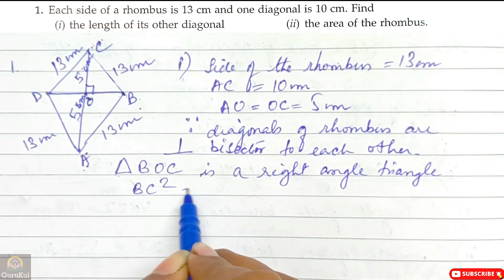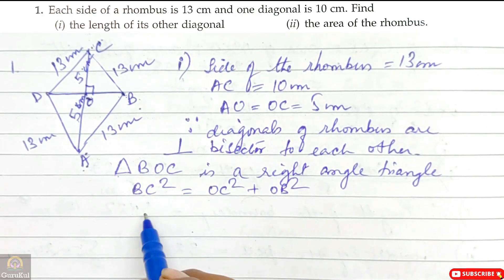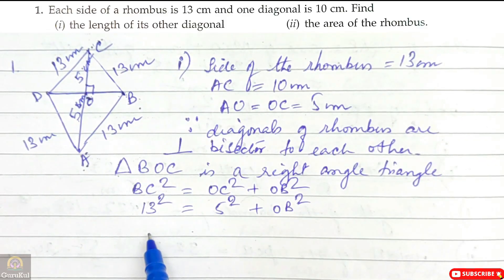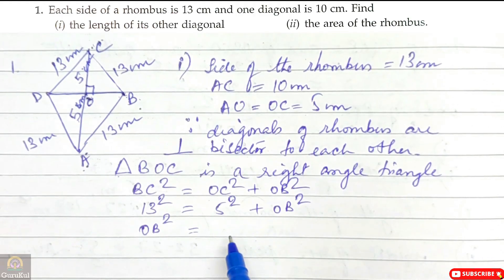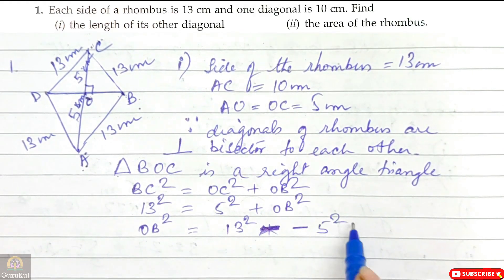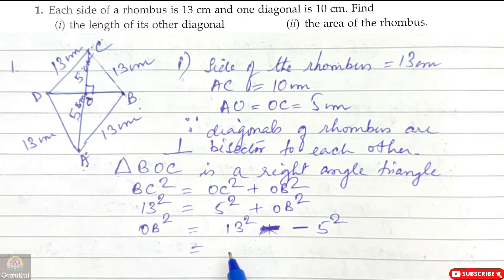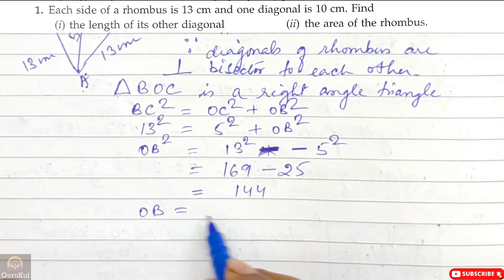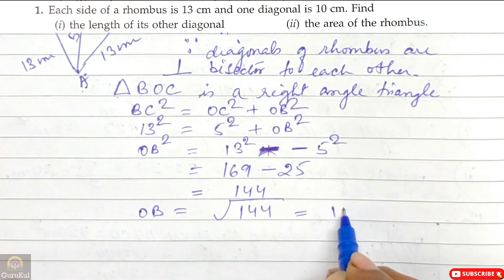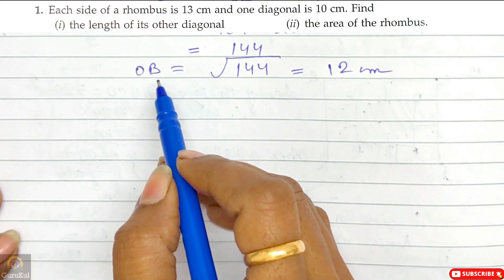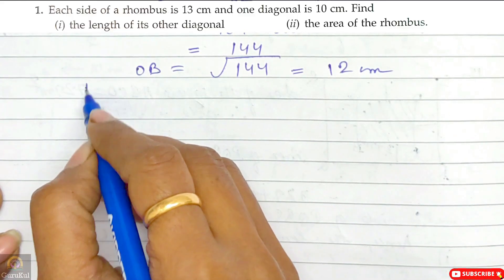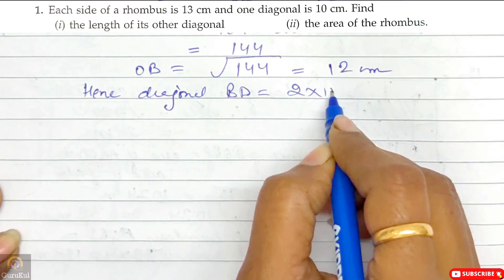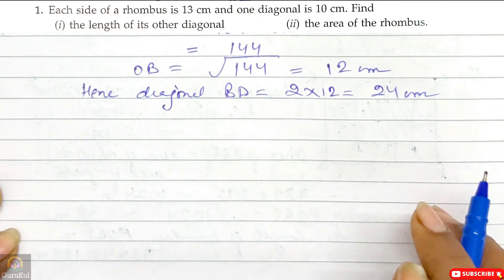B, C squared is equal to O, C squared plus O, B squared. So 13 squared equals 5 squared plus O, B squared. Therefore O, B squared equals 13 squared minus 5 squared, which is 169 minus 25, which is 144. So O, B equals the square root of 144, which is 12 cm. Since O, B is half of diagonal B, D, the diagonal B, D equals 2 into 12, which is 24 cm.